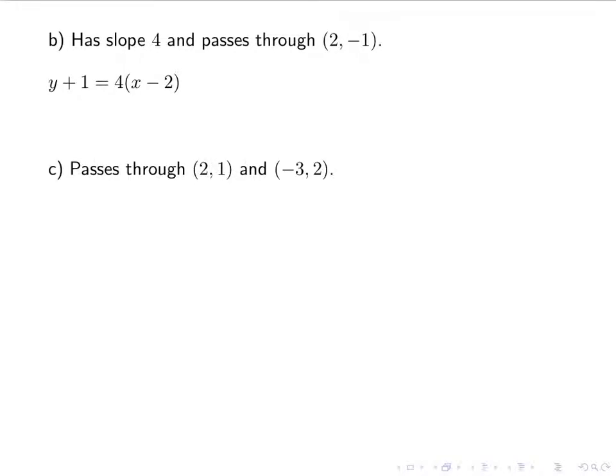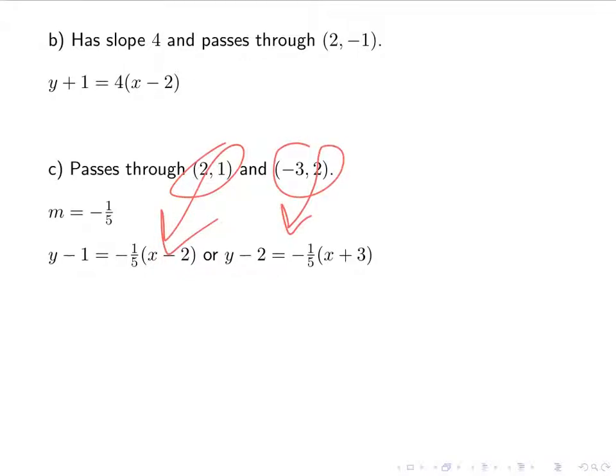Another one, a line that passes through 2, 1 and negative 3, 2. So again, just like with a, I have to find the slope first. And if I do that, I should be getting negative 1 fifth. And then I'm going to put it into point-slope form. Using this point, I get the following line. Or I could use the other point. And I would get this line. So either y minus 1 equals negative 1 fifth times x minus 2, or y minus 2 equals negative 1 fifth x plus 3. Either one is perfectly fine.